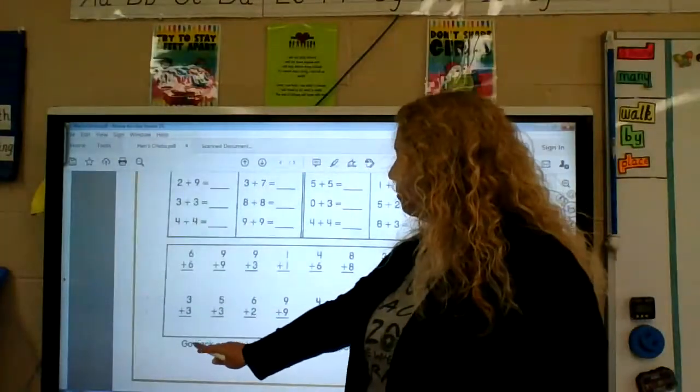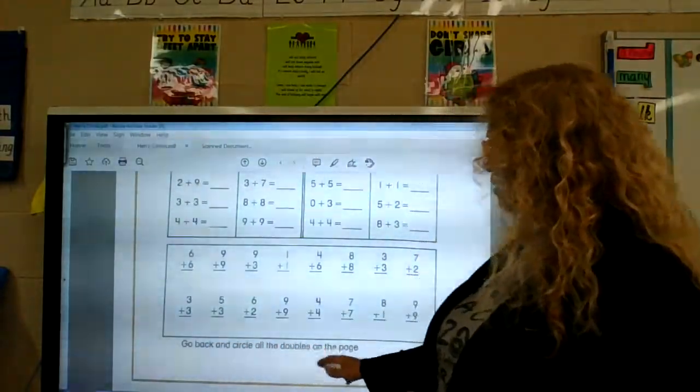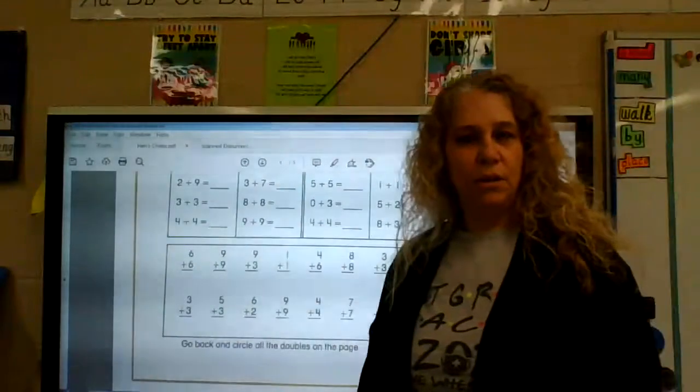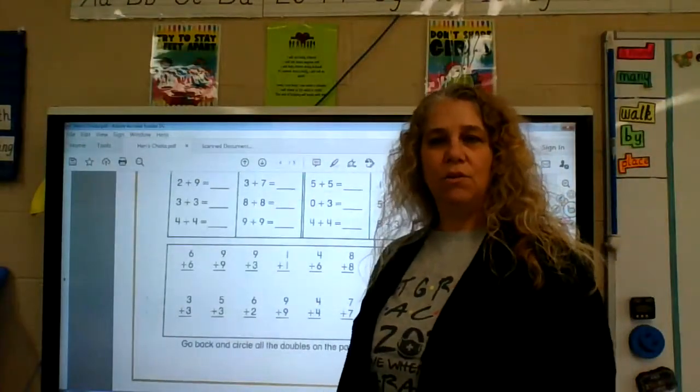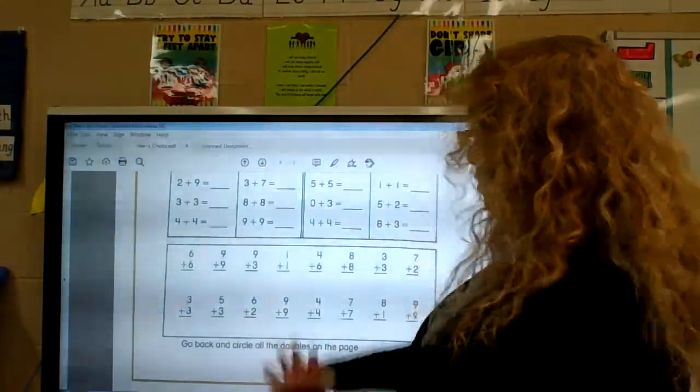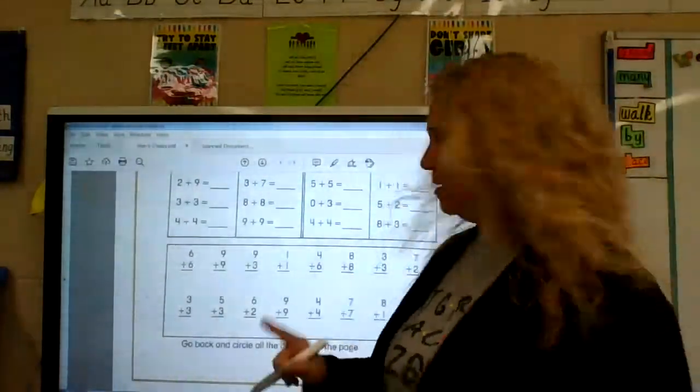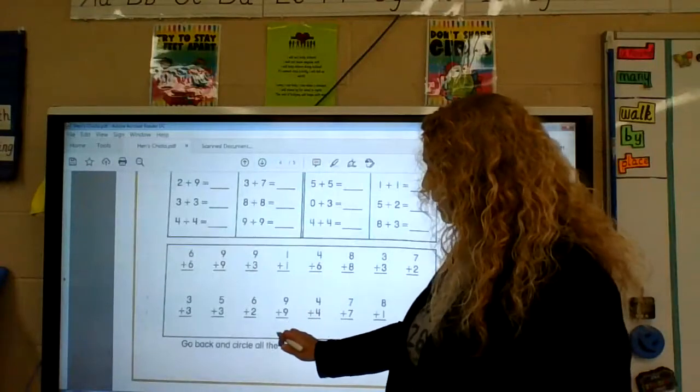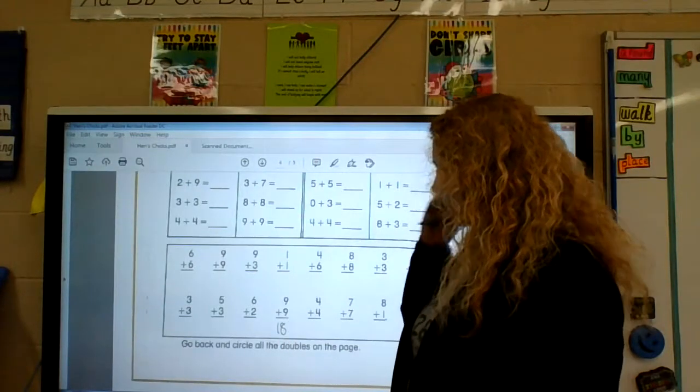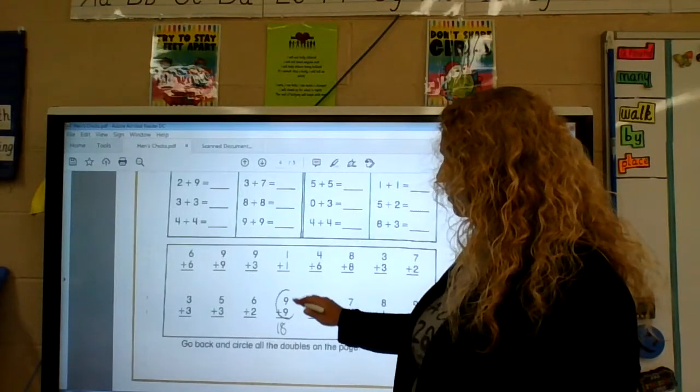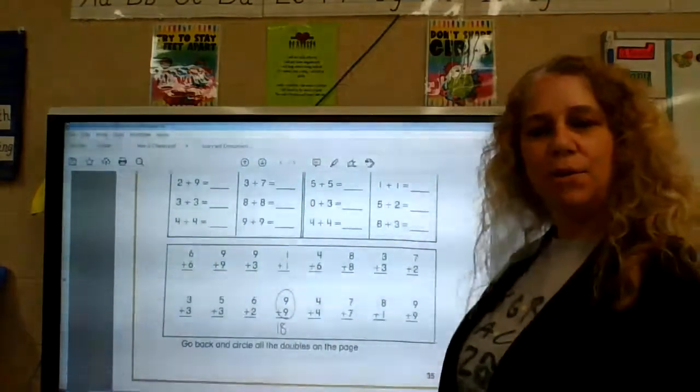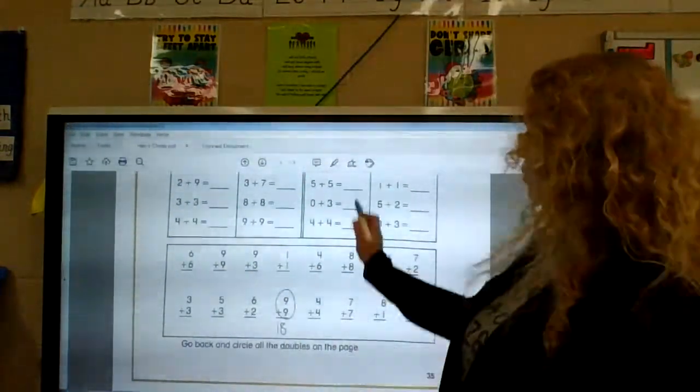Make sure when you're done that you check and you've answered every one. And then it says, go back and circle all the doubles on the page. So, after you do it, then you go back and circle it. Like, I see. They pop out at me. Nine plus nine is eighteen. And then we would make sure that we circled that one, right? Because that's a double.